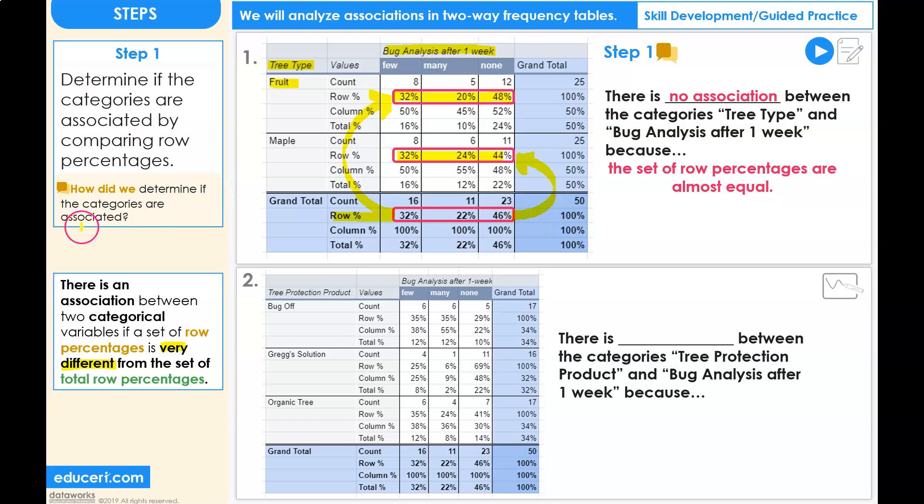How did we determine if the categories are associated? The two categories of tree type and bug analysis after one week are not associated, and we determine that by comparing the set of row percentages from each group against the grand total row percentage. You are now ready to analyze for associations in problem number 2.